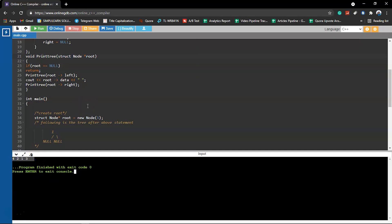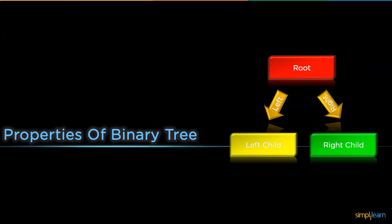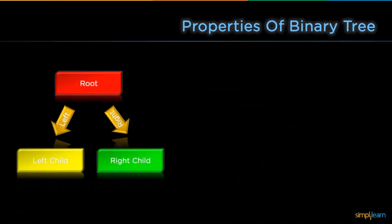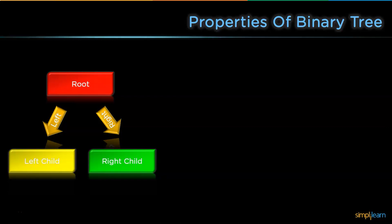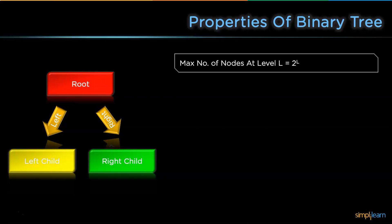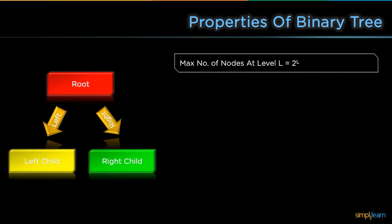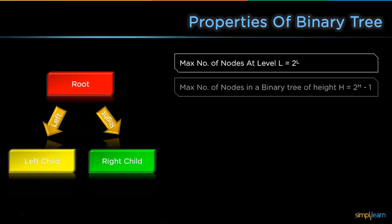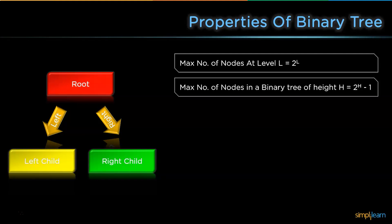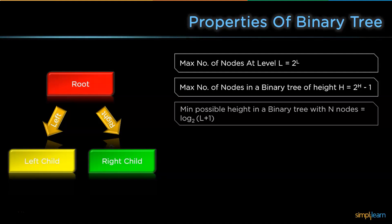Now let's get back to the theory part and learn about the properties of a binary tree. The maximum number of nodes at a level l is 2 to the power of l. The maximum number of nodes in a binary tree of height h is equal to 2 to the power of h minus 1.